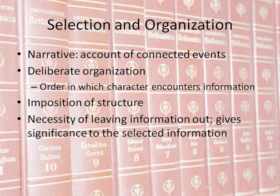Selection and organization of information is central to the encyclopedic project. Because we're examining a narrative form — an account of connected events — there is a deliberate organization which occurs in the order in which the characters encounter the information presented. This imposes a structure on the work: in Gravity's Rainbow through the experiencing of information, and in the Library of Babel through the rigid structure of the library containing the information, to give consistency to the narrative. Because the experience is limited to one character or story, information is necessarily left out, which gives significance to the information selected.